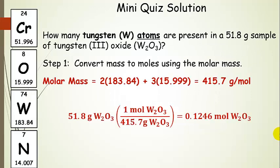We started off with mass, so we need to go to numbers of molecules and then numbers of atoms — we have to go through moles. We'll right away calculate the molar mass, since we're starting with a mass. The molar mass of tungsten is 183.84, and there are three oxygens. Adding it all up, we get 415.7 grams per mole of tungsten 3 oxide.